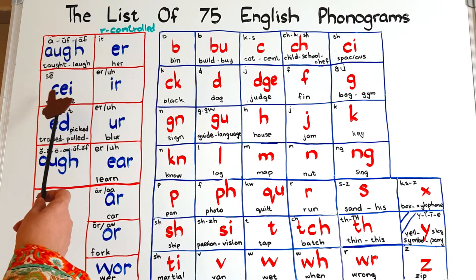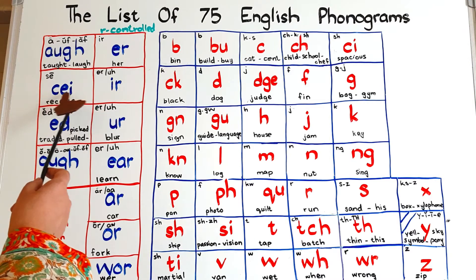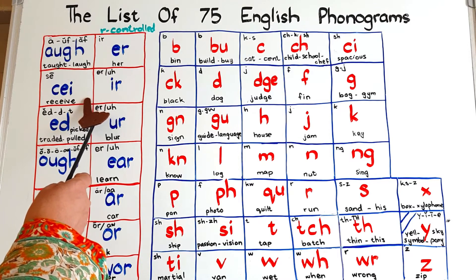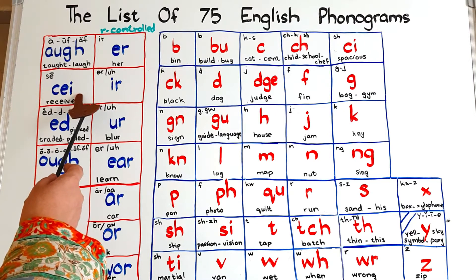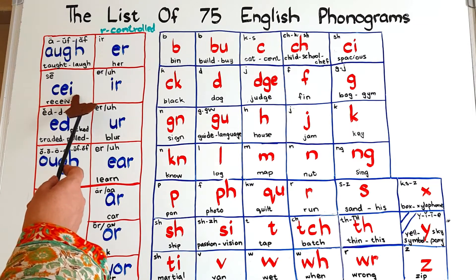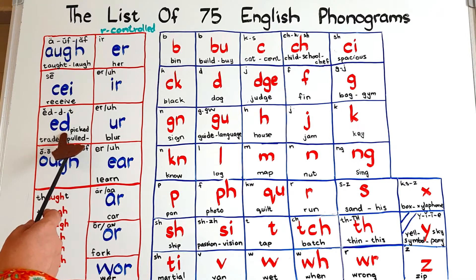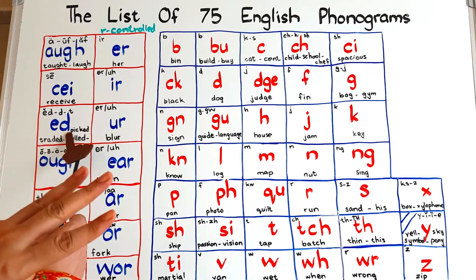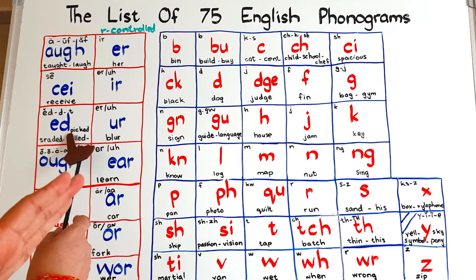Then we have CEI. If you know the rule 'I before E except after C,' this combination should be familiar. But this rule has lots of exceptions, so to make things easier for children we have made this combination a phonogram. Whenever they see CEI they will read it as 'see', as in 'receive'. This can be a tricky pronunciation for children because the movement of the tongue is a little difficult for non-native speakers.